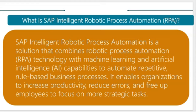What is SAP Intelligent Robotic Process Automation? SAP Intelligent Robotic Process Automation is a solution that combines robotic process automation technology with machine learning and artificial intelligence capabilities to automate repetitive, role-based business processes. It enables organizations to increase productivity, reduce errors and free up employees to focus on more strategic tasks.